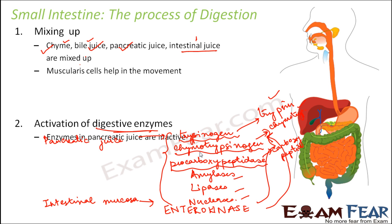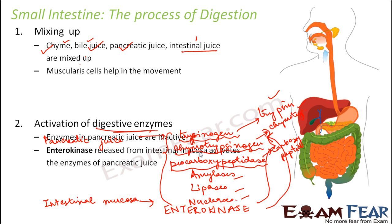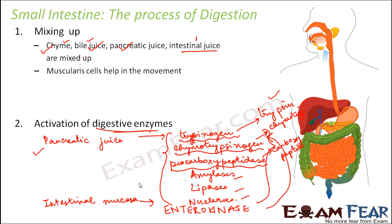Once the enzymes are active, they will help in the real digestion process. The next step — the third and most important step — involves the chemical reactions where food particles and complex substances are actually broken down into their simplest form.